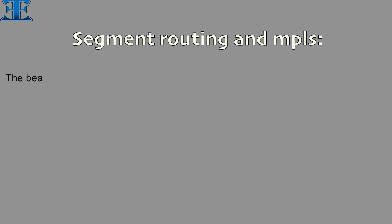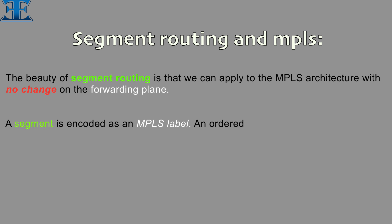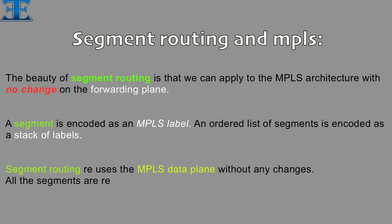The beauty of segment routing is that we can apply it to the MPLS architecture with no change on the forwarding plane. A segment is encoded as an MPLS label, and an ordered list of segments is encoded as a stack of labels. Segment routing reuses the MPLS data plane without any changes — all the segments are represented as MPLS labels.